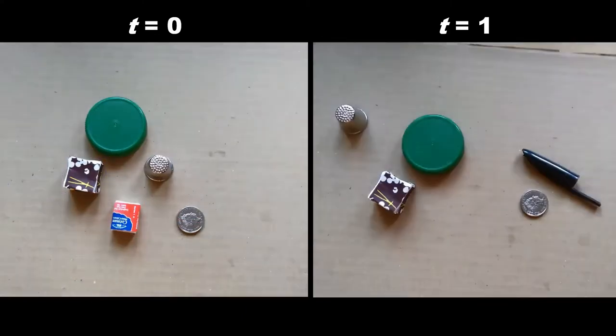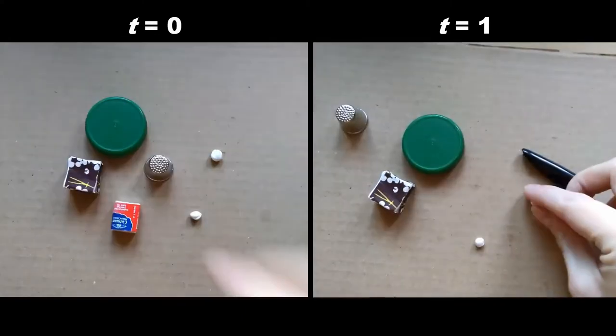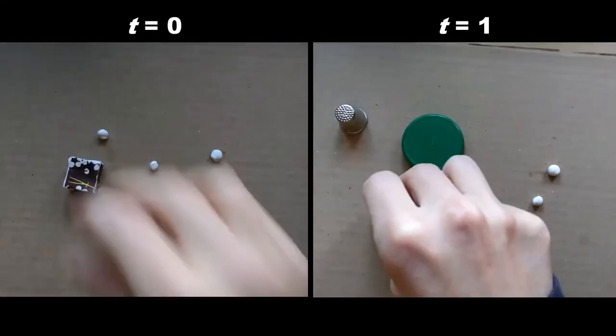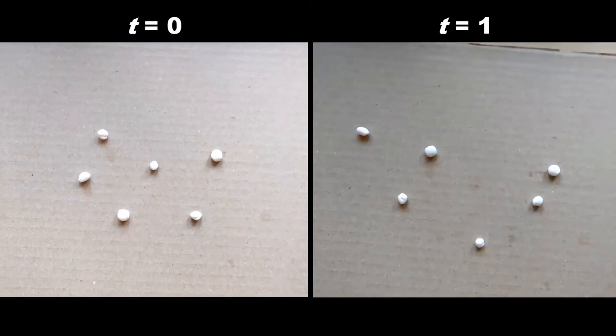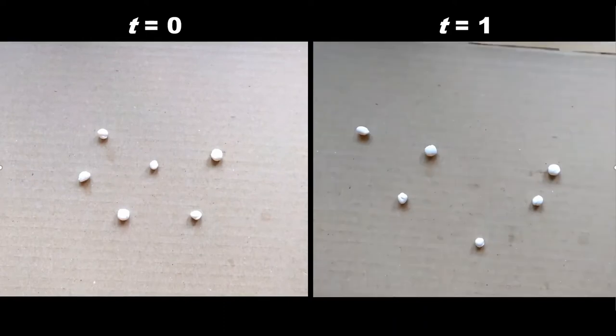But if we take away all this identifying information and rely on their positions alone, which is what we normally do with cell tracking algorithms, suddenly this becomes a much more difficult task. While some of the links we make with this information are correct, many others are incorrect.